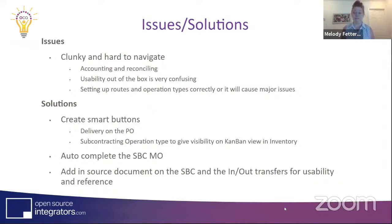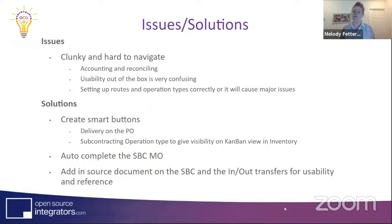Coming from the user's world — someone who uses the system day in and day out — one solution we found is creating smart buttons inside Odoo, which is extremely usable for the client. On the purchase order itself, it automatically shows the delivery so users don't need to search for transfers under the inventory overview screen. We also added the subcontracting operation type to the kanban view for visibility, so users can see what's waiting to go out for subcontracting and what's waiting to come back in.